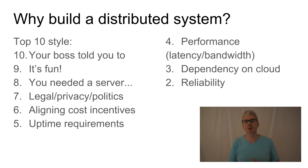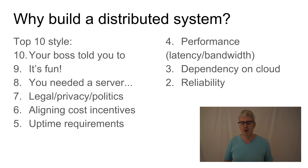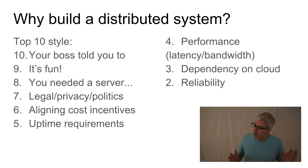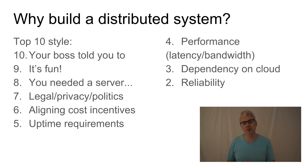Reason number two: reliability. A single server can only be made so reliable at a sane cost, and even at infinite cost there's a fixed amount of reliability you can get, because Murphy's Law always tends to win. But if you can distribute your system over more than one computer in more than one physical location — with appropriate load balancing, failover, and operational support — you can build a system that is much more reliable than any single computer can provide. That is a great reason for building a distributed system if you need it and are willing to pay the cost.